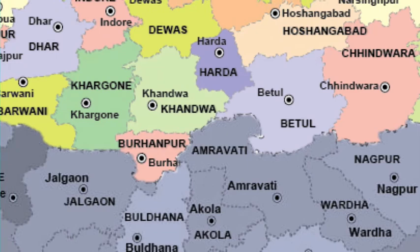River Tapi originates in the state of Madhya Pradesh from the district of Betul. From there it travels to the state of Maharashtra in the district of Amravati, forming the borders between the Khandwa district, Amravati district and the Betul district.